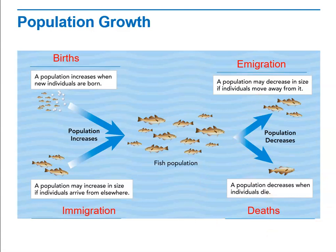Deaths also decrease population — a disease, natural disaster, or predators attacking the population could result in a decrease. When talking about population growth, we must consider all four factors. If the rate of births and immigration is greater than the rate of deaths plus emigration, then we have a population that increases in size.